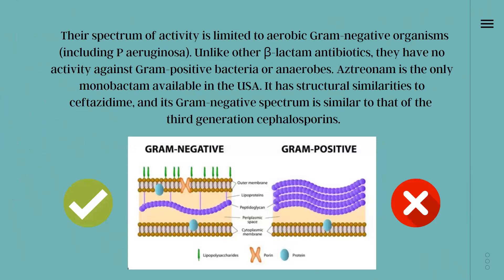If we talk about their spectrum, the spectrum of activity is limited to aerobic gram-negative organisms, including P. aeruginosa. Unlike other beta-lactam antibiotics, they have no activity against gram-positive bacteria or anaerobes — they are only effective against gram-negative bacteria. Gram-negative bacteria have an outer membrane and peptidoglycan, but peptidoglycan is present in much lesser quantity than in gram-positive bacteria.